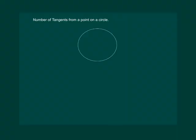Let us try to understand the idea of number of tangents from a point on a circle. Let us take a point P inside the circle.